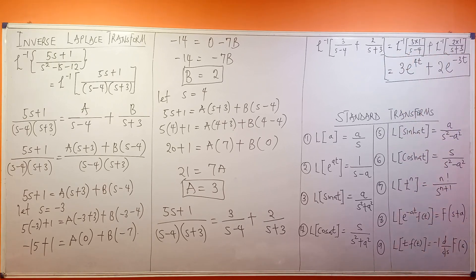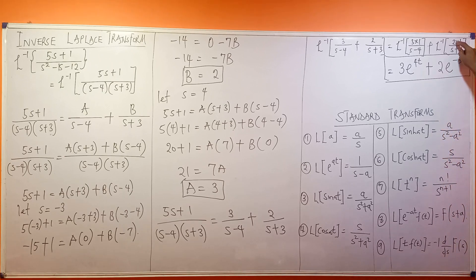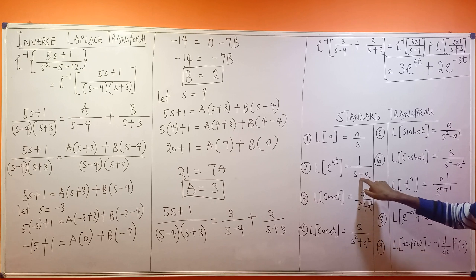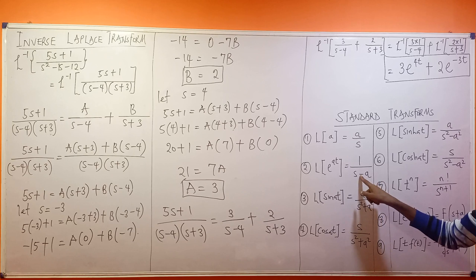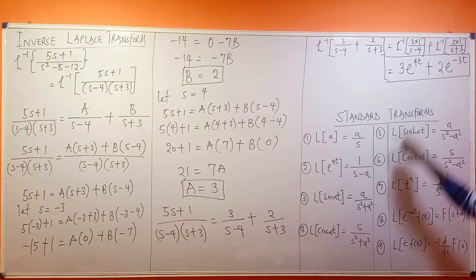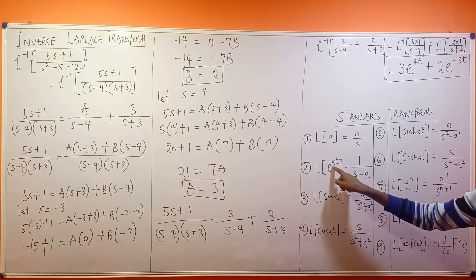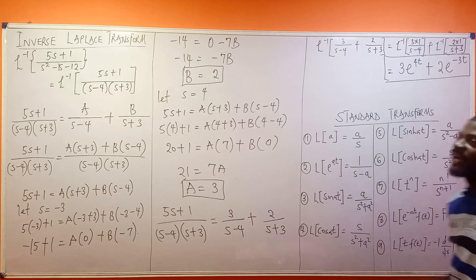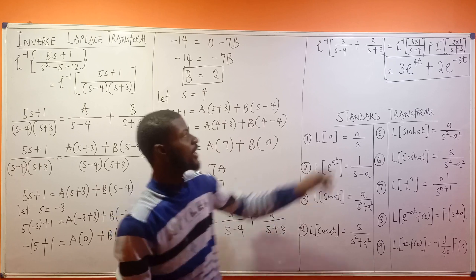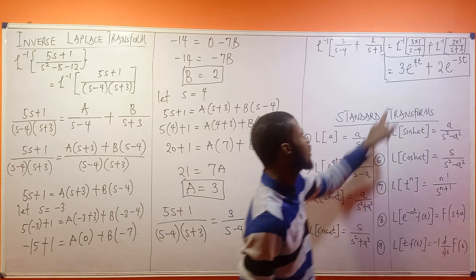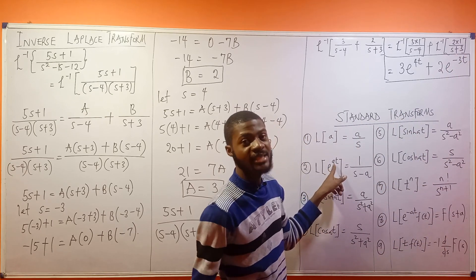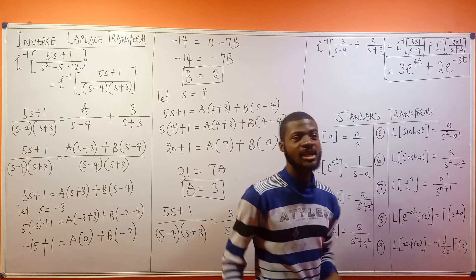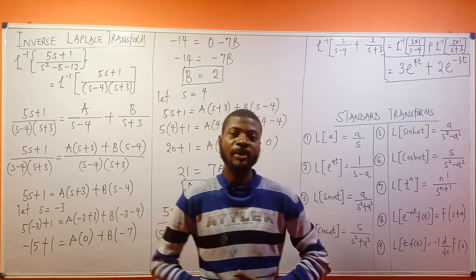Let me explain the sign once more. For 2/(s + 3): since the definition uses (s - a), the +3 means a = -3, giving a negative exponent. So the final answer is 3e^(4t) + 2e^(-3t). For s - 4, a = 4 (positive), and for s + 3, a = -3 (negative). That is the final answer. Thank you for watching.